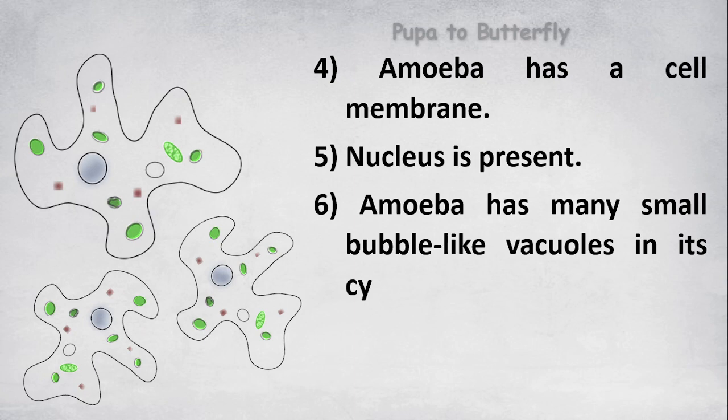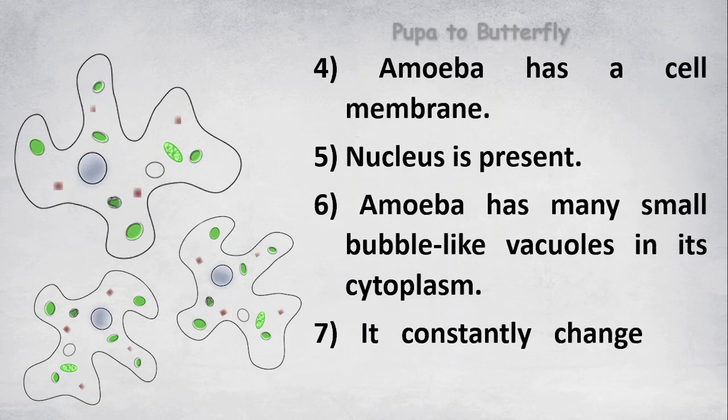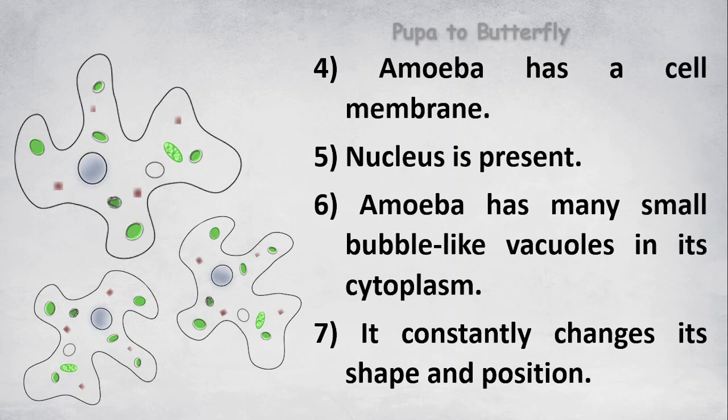Amoeba has many small bubble-like vacuoles in its cytoplasm. It constantly changes its shape and position.